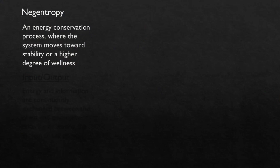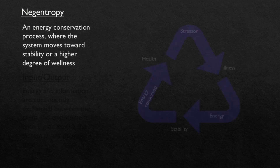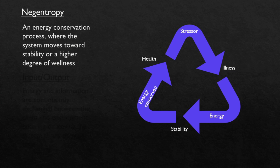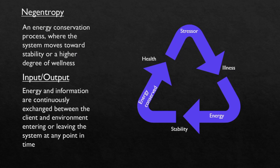Next is negentropy. It is an energy conservation process where the system moves towards stability or a higher degree of wellness. Considering the above example, if my home remedies, body mechanisms, or any additional treatment works and helps to conserve my energy and gives relief from my pain, that will be negentropy. Next is input-output. In this whole process, the energy and information are continuously exchanged between the client and environment, entering or leaving the system at any point in time — that is the process of input and output.